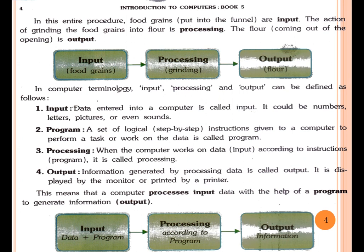Processing — when a computer works on data, that means works on input according to the instructions, it is called processing. Output — information generated by processing data is called output. It is displayed by a monitor or printer. Any information generated after your data is processed — the output shows the information displayed on your monitor or printer — that means it is your output.